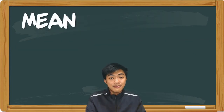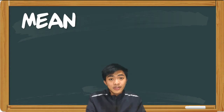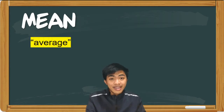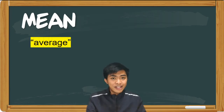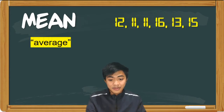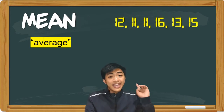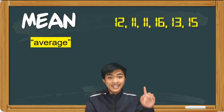Let's start with the mean. So mean is also called the average. And to obtain the mean, we just have to add all the values divided by the number of values in the dataset. Suppose we have this dataset.